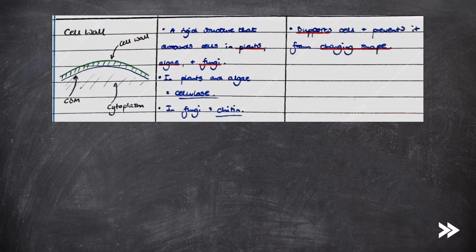Next, we have the cell wall, which is a rigid structure that surrounds cells in plants, algae, and fungi. Note that in plants and algae it's made of cellulose, whereas in fungi it's made of chitin. The cell wall supports the cell and prevents it from changing shape.